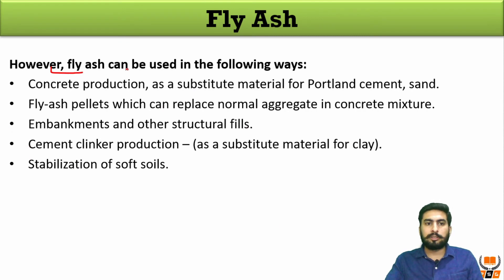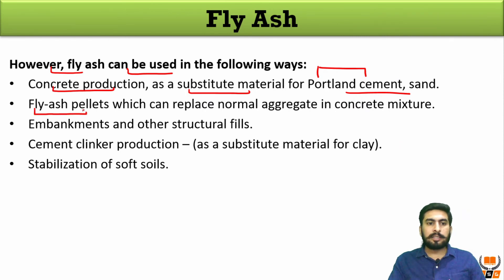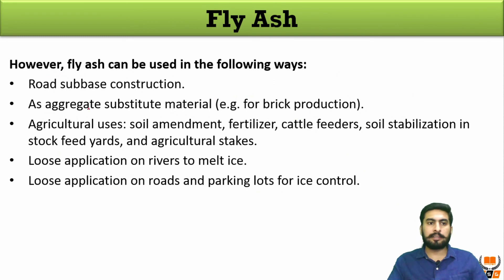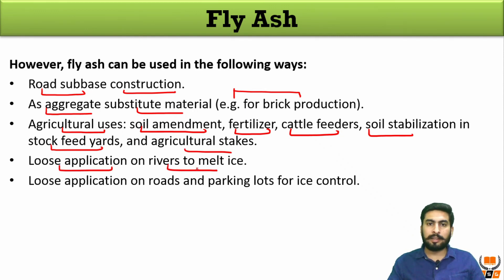How can we use fly ash? The following are some ways: concrete production as a substitute material for Portland cement and sand; fly ash pellets which can replace normal aggregate in concrete mixtures; embankment and other structural fills; cement clinker production as a substitute for clay material; stabilization of soft soil; road sub-base construction as aggregate substitute; brick production; agriculture uses like soil amendments, fertilizers, cattle feed supplements, and soil stabilization in stock feed yards; and loose application on roads and parking lots for ice control.